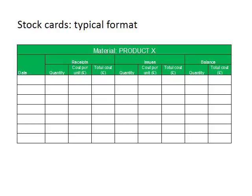We'd record the quantity in terms of units, kilograms, litres, or whatever unit is being purchased. To the right of that we will record the cost per unit that we've paid, and to the right of that we'll calculate the total cost of the units that have been purchased. That total cost is simply the quantity purchased multiplied by the cost per unit.